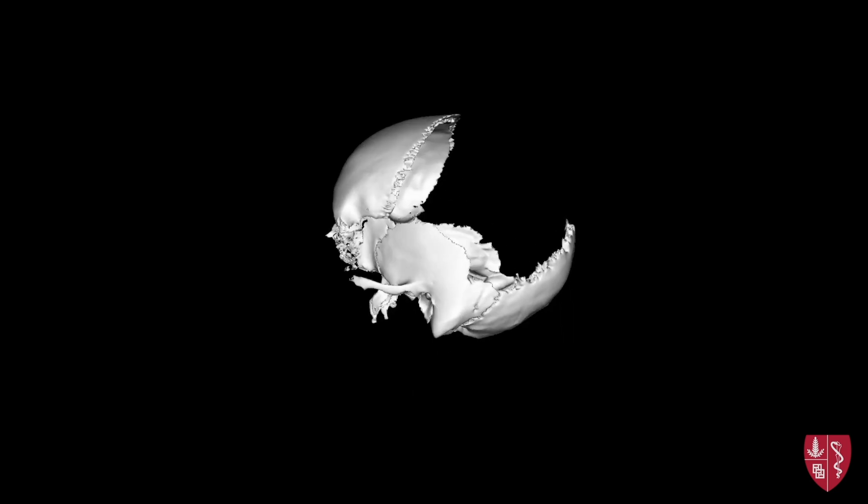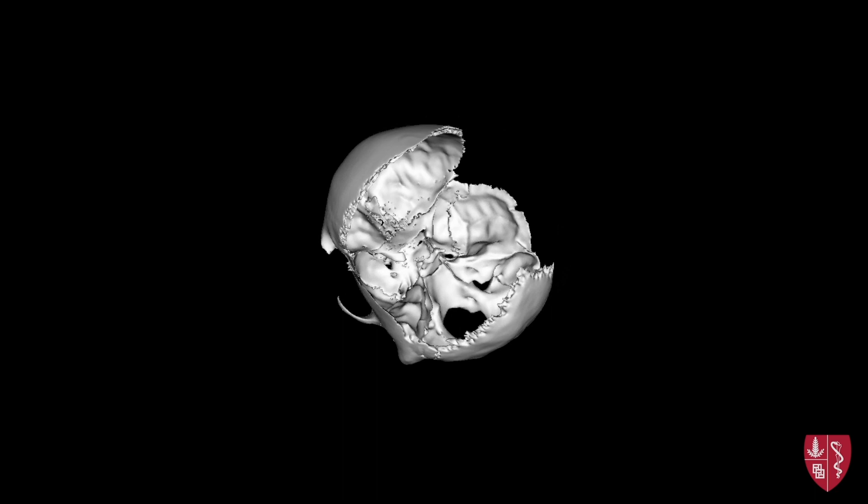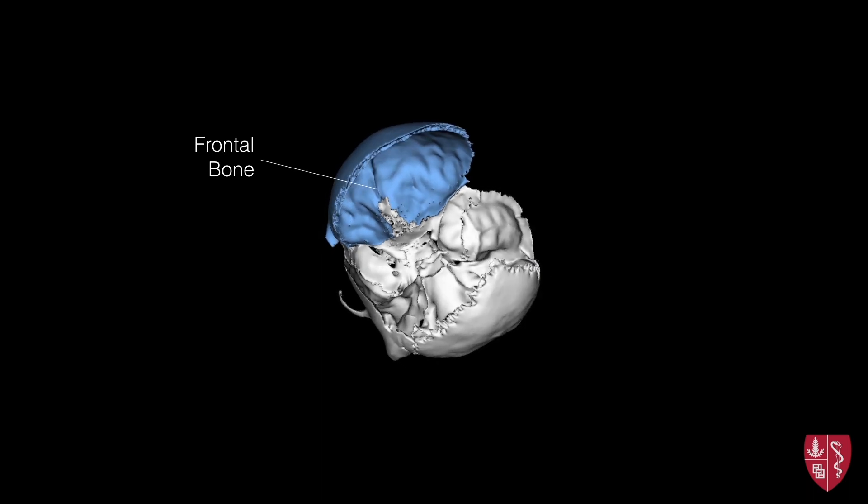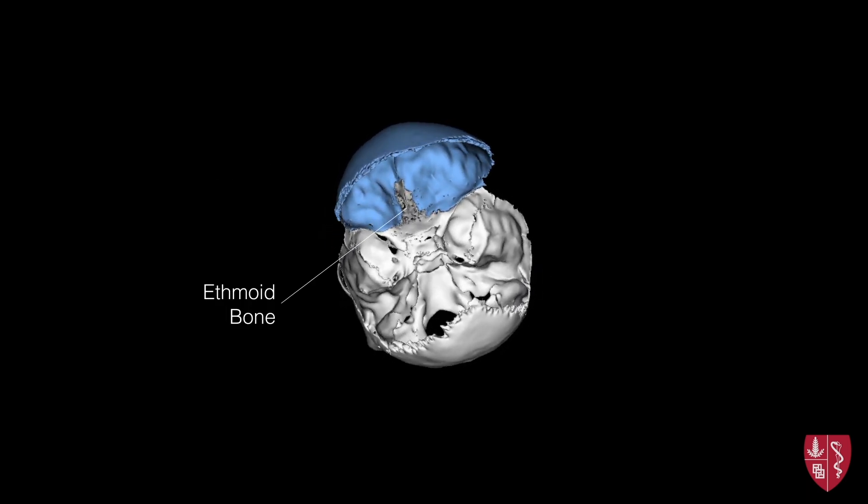The cranial base can be subdivided into three cranial fossa, or depressions which support individual aspects of the brain. The most anterior portion is known as the anterior cranial fossa, and consists of the frontal bone, the ethmoid bone, as well as the superior aspect of the sphenoid bone, known as the lesser wing.